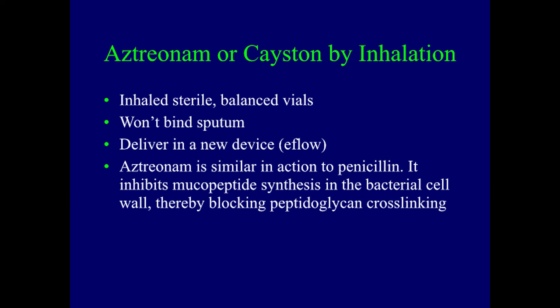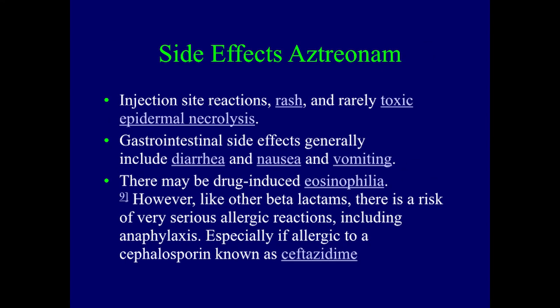Aztreonam is similar in action to penicillins — it inhibits mucopeptide synthesis at the bacterial cell wall and blocks peptidoglycan cross-linking, essentially destroying the cell wall function for bacteria. Side effects include reactions like rash; if given as an IV injection it can cause epidermal cell destruction if the IV infiltrates; GI side effects can include diarrhea, nausea, and vomiting; and drug-induced eosinophilia and allergic reactions. If a patient is already allergic to ceftazidime, they might be allergic to aztreonam as well.